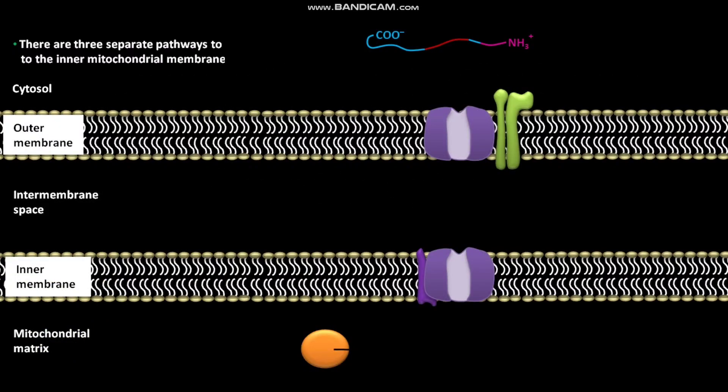There are three separate pathways to target proteins to the inner mitochondrial membrane.